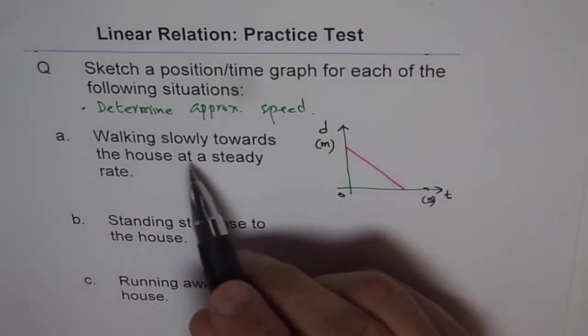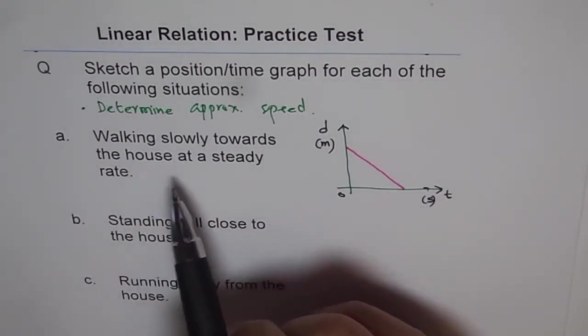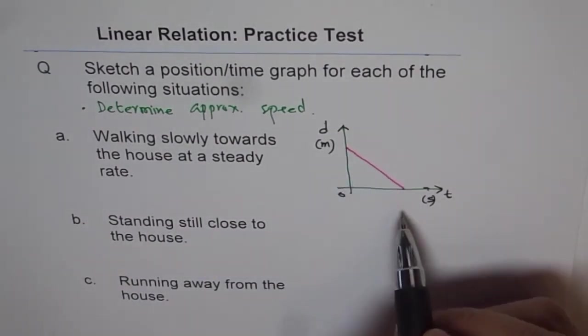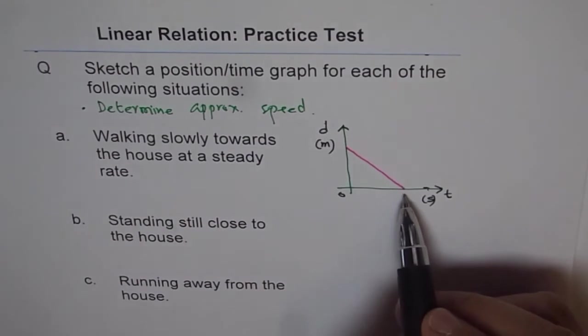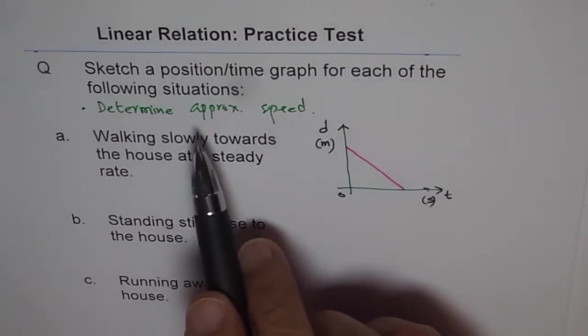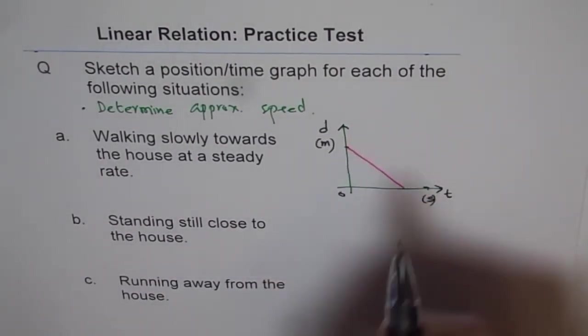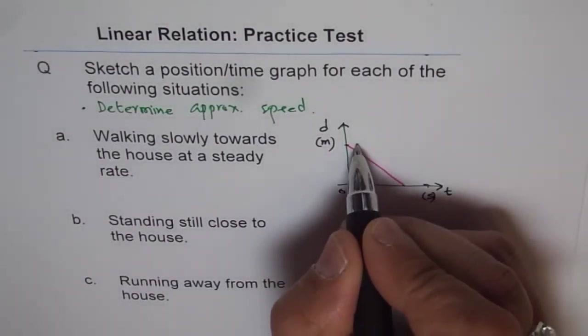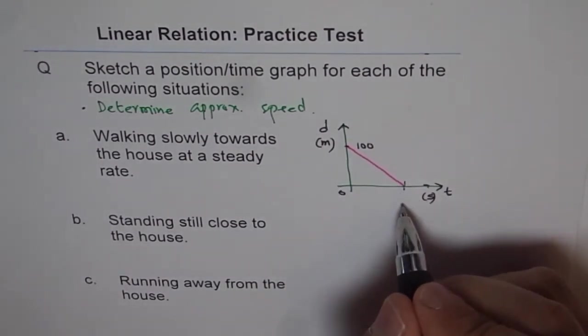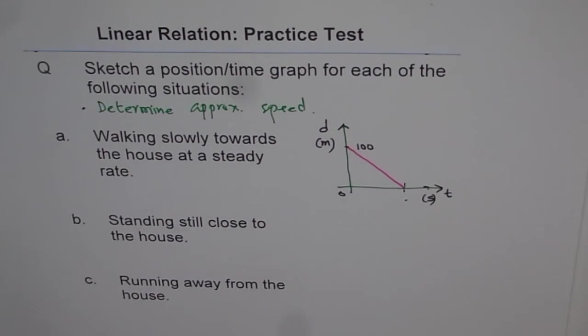Walking slowly towards the house at a steady rate means distance decreases with time. You are approaching the house, measuring distance from the house. Now, determine approximate speed. You have to take some values here. Let's say you are 100 meters away. Think about your speed and write down how much time you should take to cover 100 meters. That way you can get the speed. You can plug in some values and then write the answer.